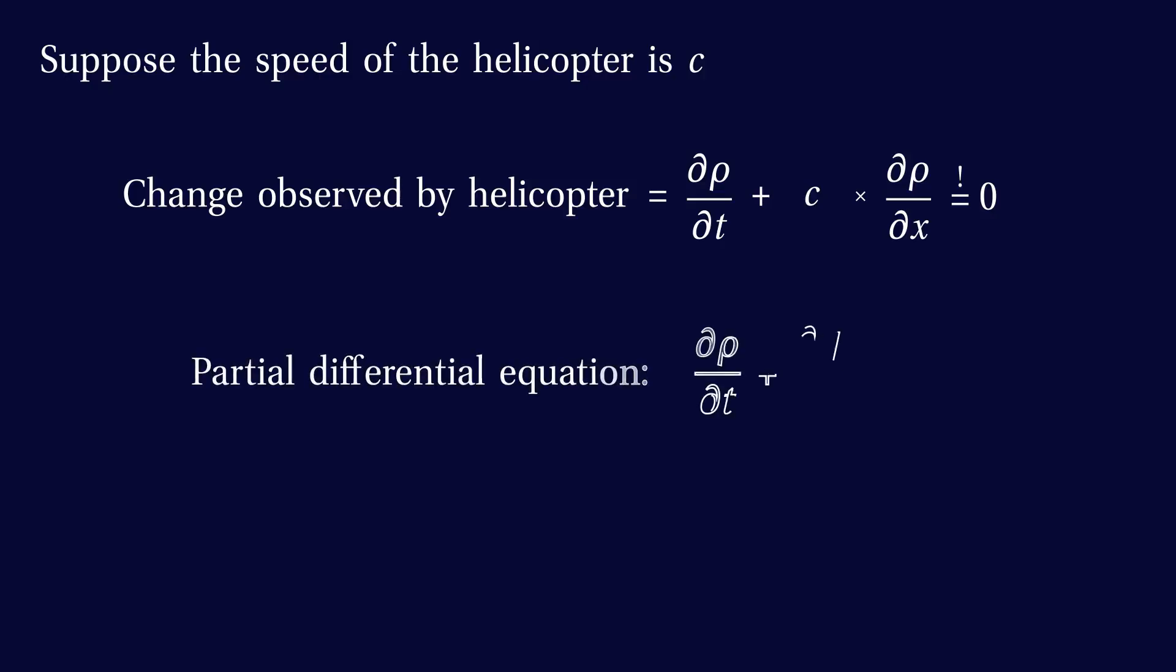Suppose the helicopter is flying at a certain speed c. The change it will observe in the traffic density, rho, is made up of two parts. One part is how rho itself is changing through time, the other part is due to the helicopter's motion. It's given by the helicopter's speed c times how rho is changing in space. We want the helicopter to see a constant density, so we want this total change to be 0.